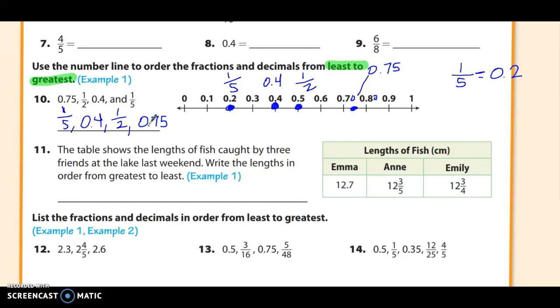Number 11. Number 11 reads, the table shows the lengths of fish caught by three friends at the lake last weekend. Write the length in order from greatest to least. So let's go ahead and analyze this just a little bit. We've got 12 and 12 and 12. So the whole numbers are all the same. But now I've got a decimal and two fractions.